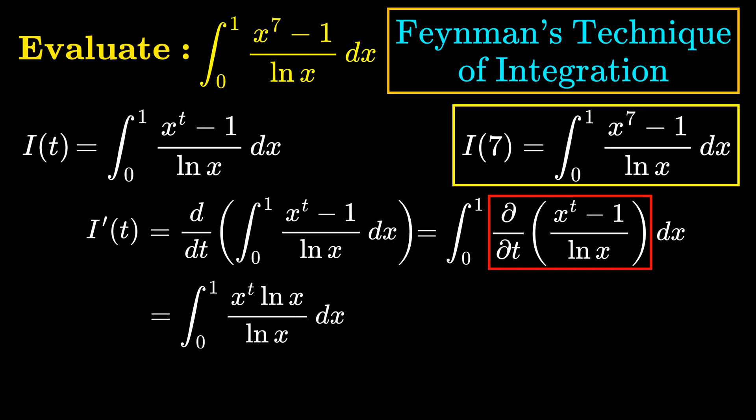The partial derivative gives us x^t · ln(x) / ln(x). The nice thing about this is that ln(x) cancels, and we have removed the part of the integral that was holding us back from solving it. So integrating x^t with respect to x is just x^(t+1) / (t+1), by using the power rule for integration.